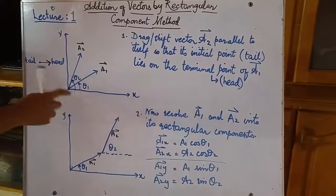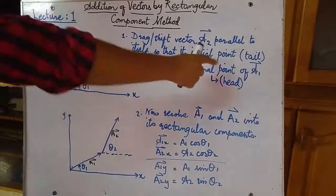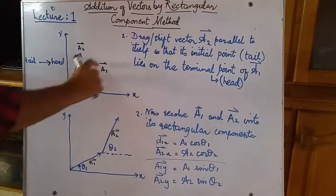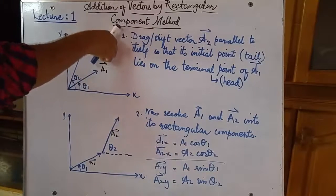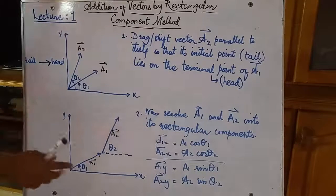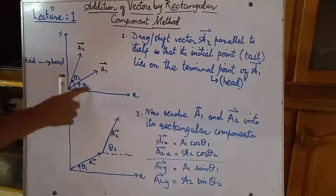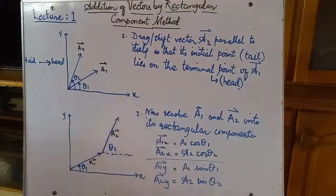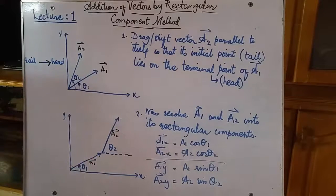Its initial point lies at the terminal point of A1, and looks like that. I've made the figure below; it just exactly looks like that. Here you can already see that theta1 remains theta1 and theta2 remains theta2. No change in angle at all. We just dragged it to the terminal point of A1. Now that we have dragged it, we can apply head-to-tail rule easily before applying head-to-tail rule.